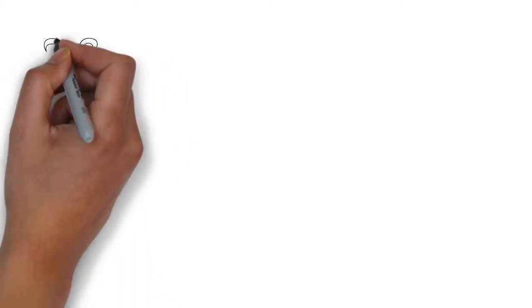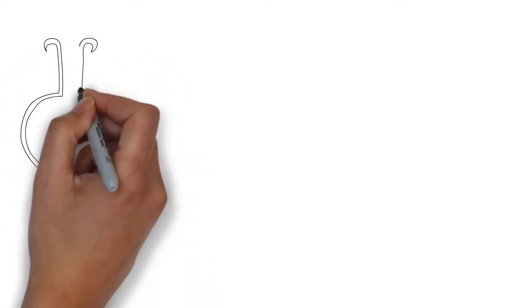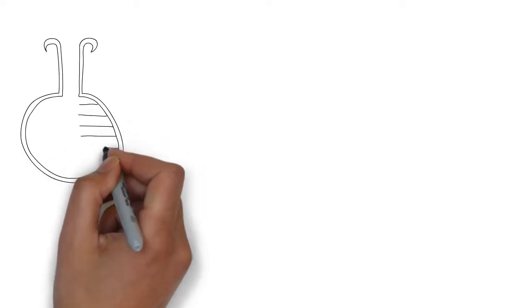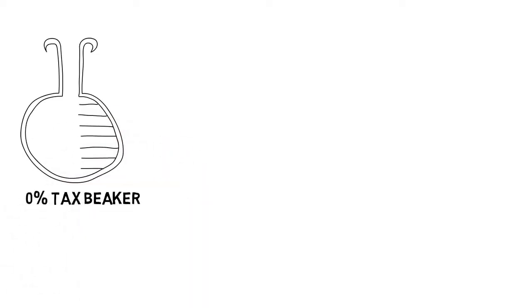After you have reached these incomes, you would start owing money on the overflow of the amount that flows outside of the beaker.